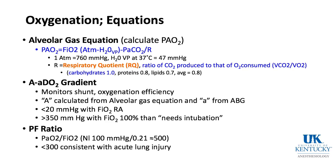The A-a gradient is the difference between alveolar PAO2 (calculated from the alveolar gas equation) and arterial PaO2 (from the ABG). The PF ratio is PaO2 divided by FiO2. Normally, breathing room air with PaO2 ≈ 100 and FiO2 = 0.21, the PF ratio ≈ 500. A PF ratio less than 300 is consistent with acute lung injury.